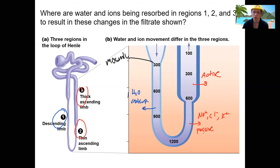Regions 1, 2, and 3. The last thing I want to show on this image is the osmolarity of the medulla. So this is our interstitial fluid of the medulla.